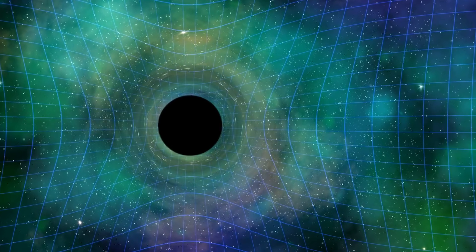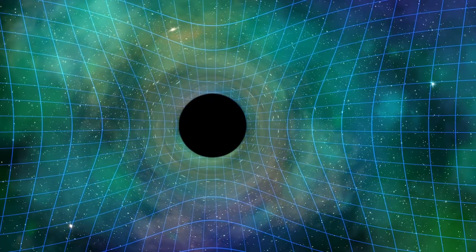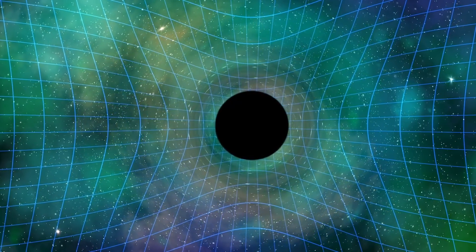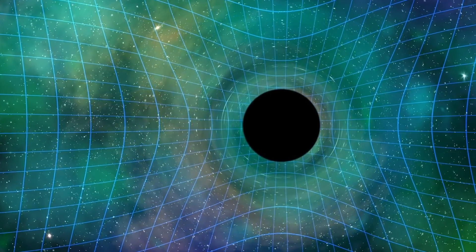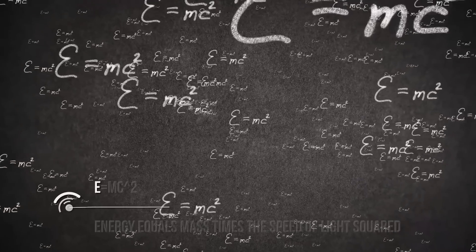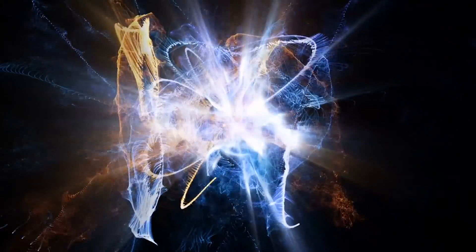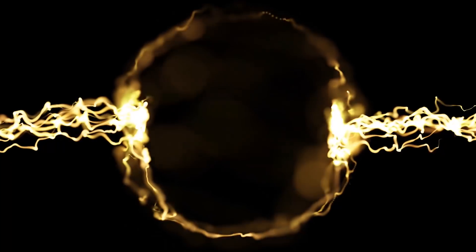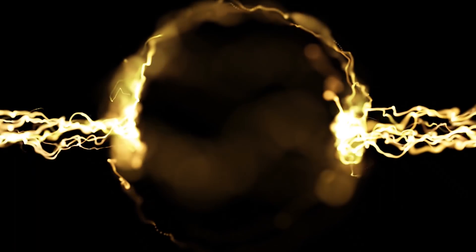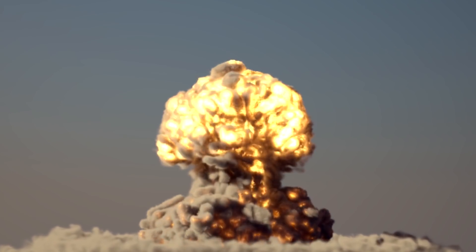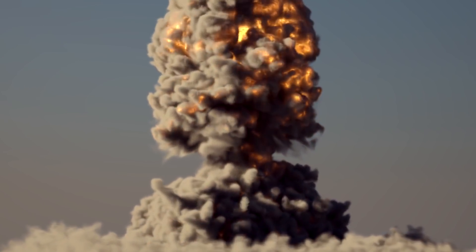Now let's talk about some very important corollaries of special relativity. One of the most famous equations in physics comes from special relativity: E equals mc squared, meaning energy equals mass times the speed of light squared. It shows that energy and mass are interchangeable — they are different forms of the same thing. If mass is somehow converted into energy, it shows how much energy resides inside that mass. This equation is one of the demonstrations for why an atomic bomb is so powerful once its mass is converted into energy.